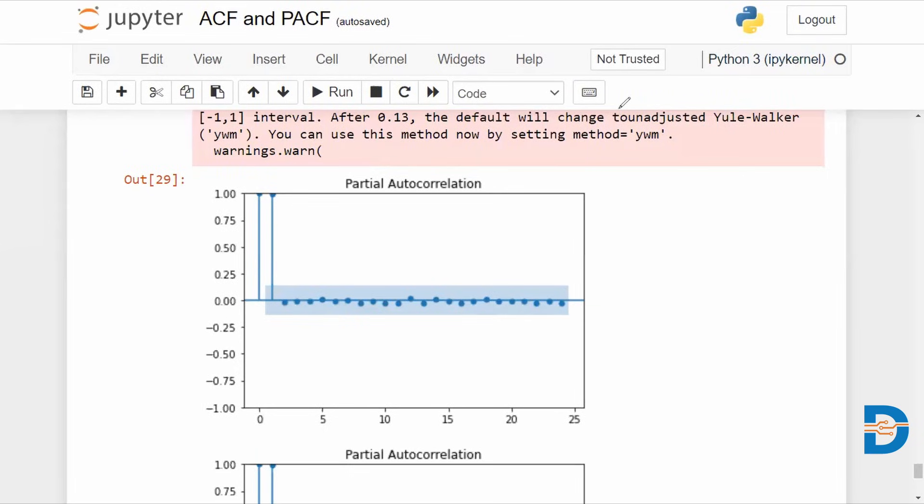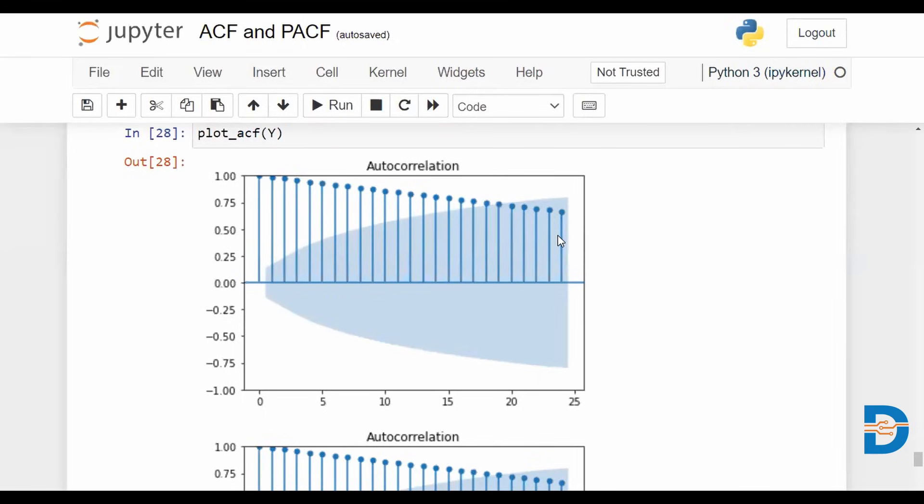So what we have here is a data that has been synthetically generated. And you can see in the ACF plot, this is a gradually declining autocorrelation plot, which is typical of non-stationary data. And this is indicating that we can imply an AR model.